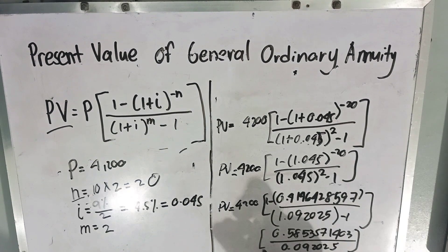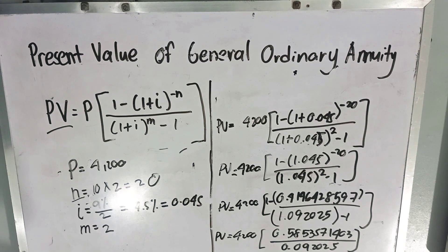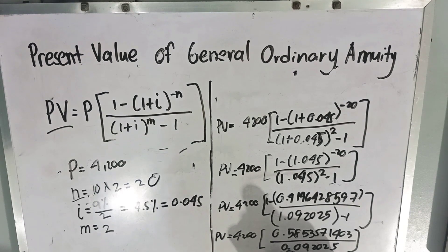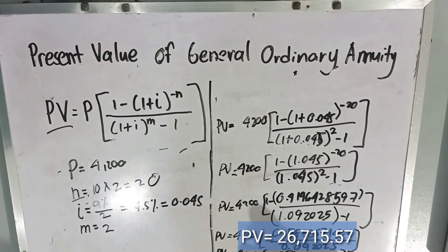Now let's divide the value inside the bracket: 0.5853571403 divided by 0.092025. The answer is 6.3608491203, multiplied by 4,200. Our present value is 26,715.57 pesos.